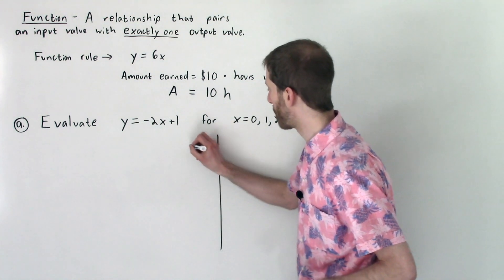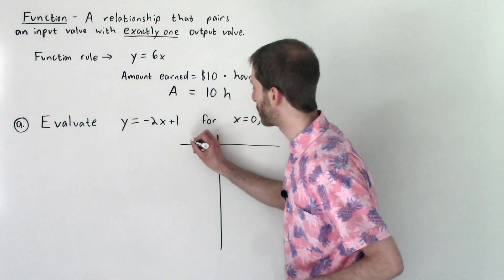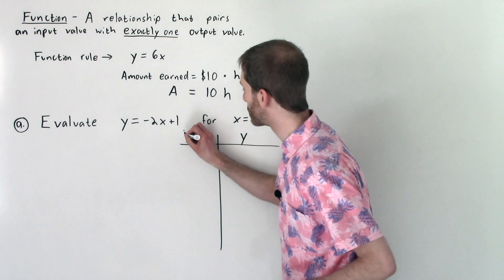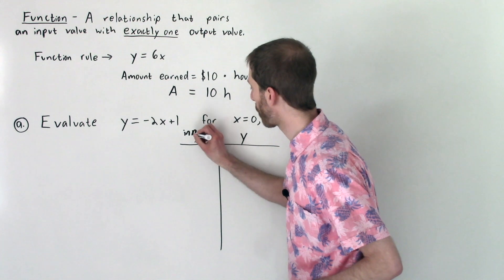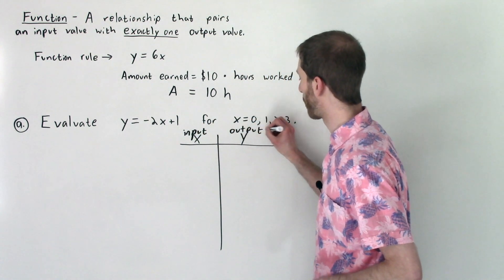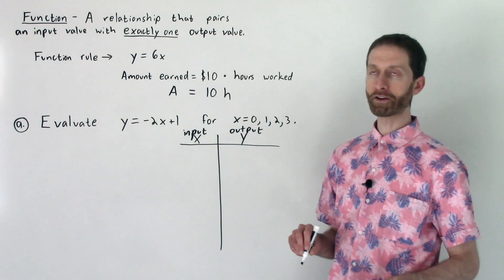So our inputs are our x values. So that'll be x and our outputs are our y values. So think that this is input, what we're putting in, and this is output. All right. And let's see what values we get.